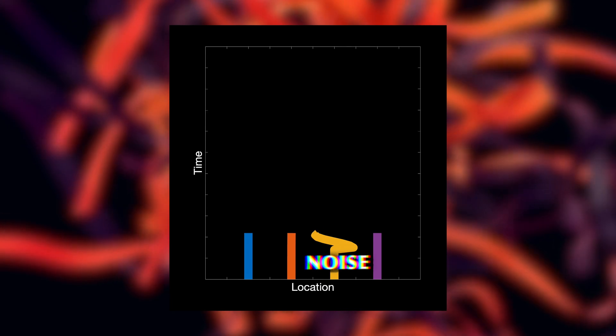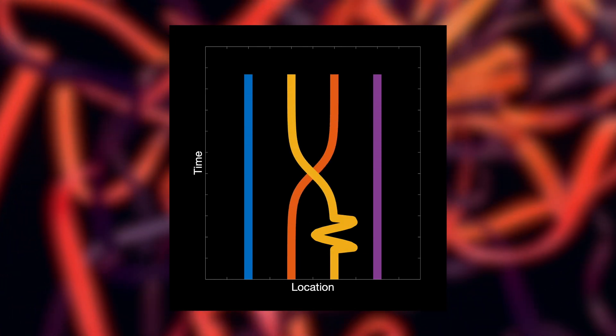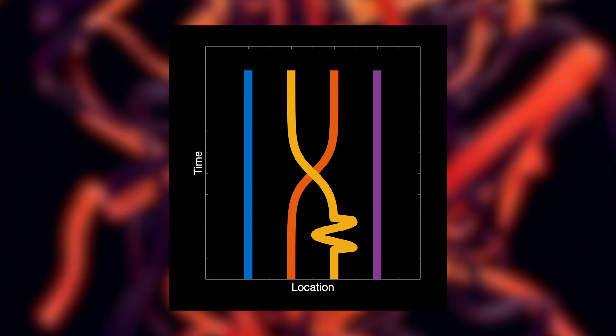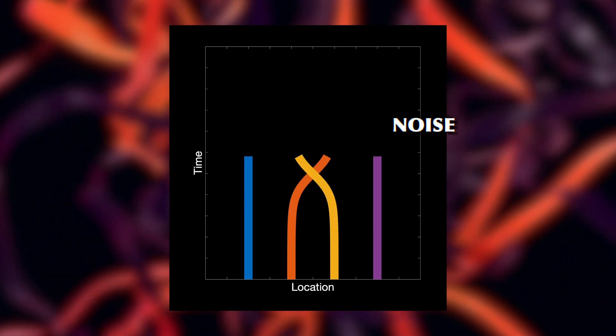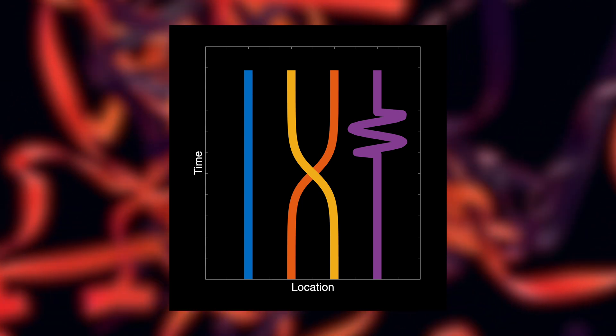These braids also have a topological quality, in that the end state of the system only depends on what kind of braiding operation was done, not on the exact path that was taken. Again, noise will only affect the worldline locally, but not change the braid itself and therefore keeps the quantum state intact. So how can you use that for quantum computation? It turns out that any operation you require for quantum computing can be replaced by a more or less complex braid.